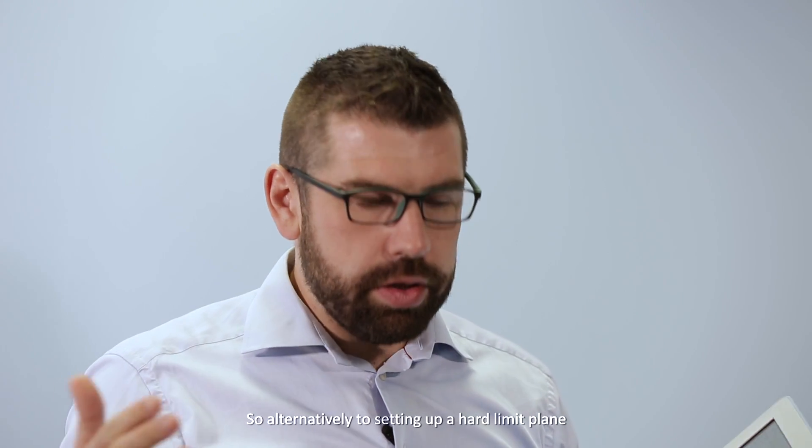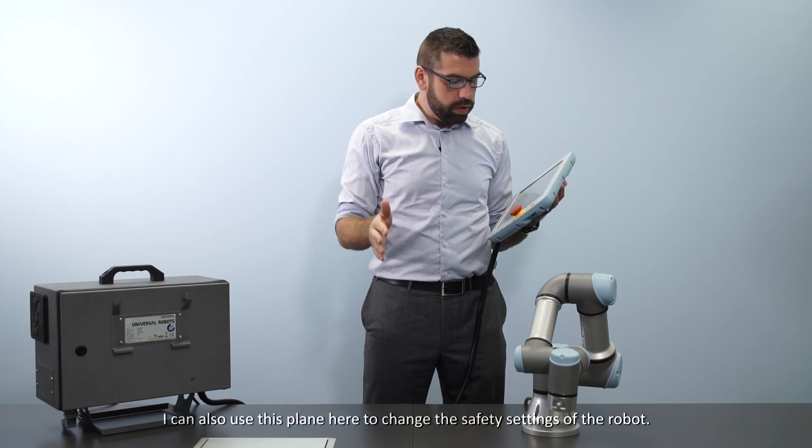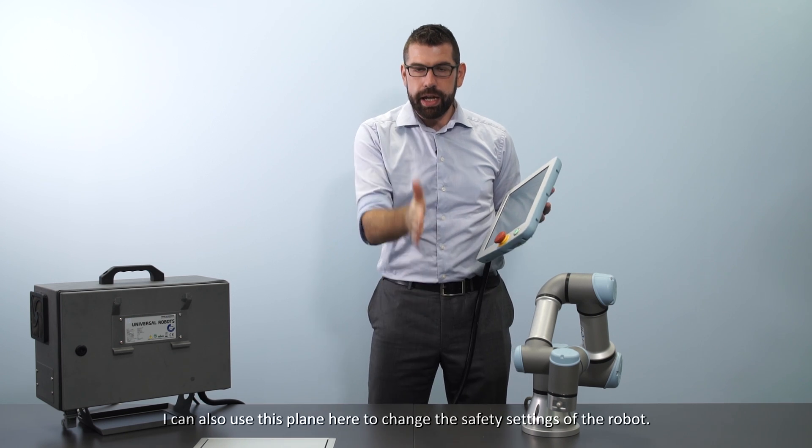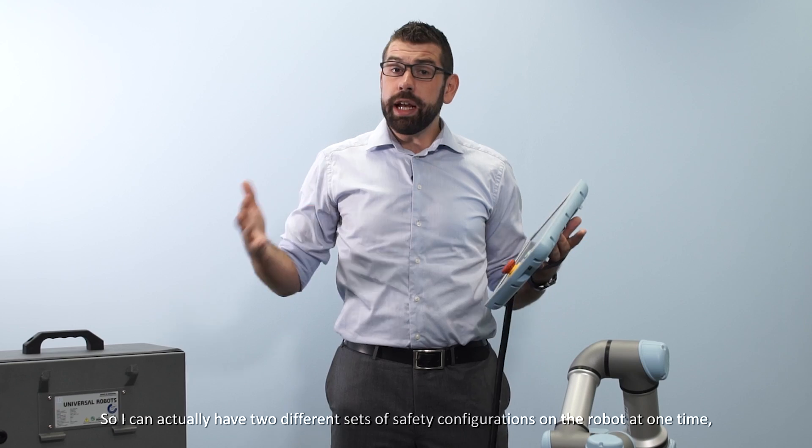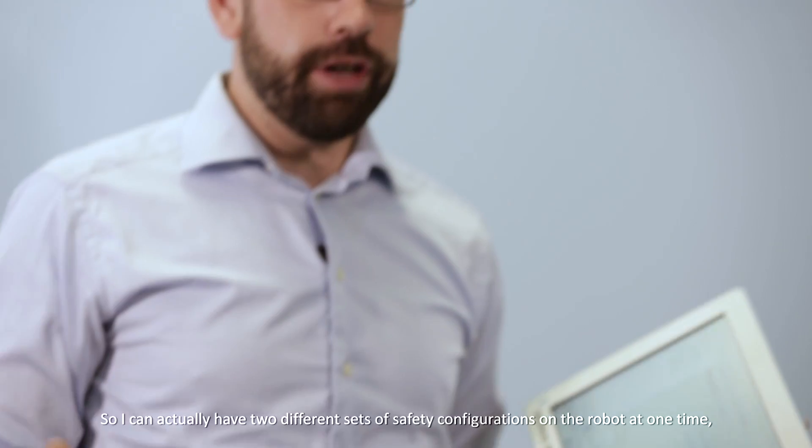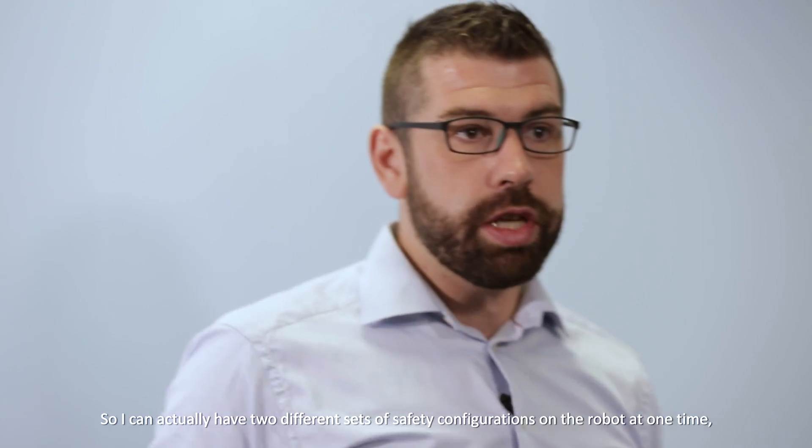So alternatively to setting up a hard limit plane, I can also use this plane here to change the safety settings of the robot. So I can actually have two different sets of safety configurations on the robot at one time.